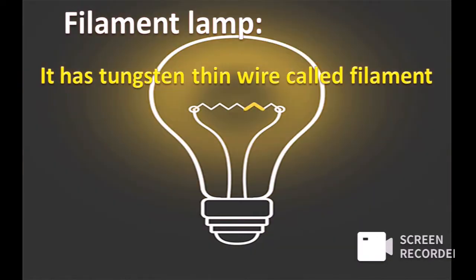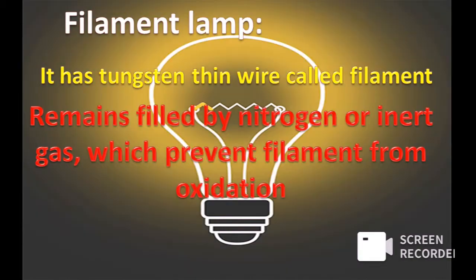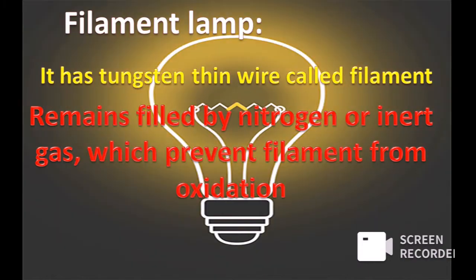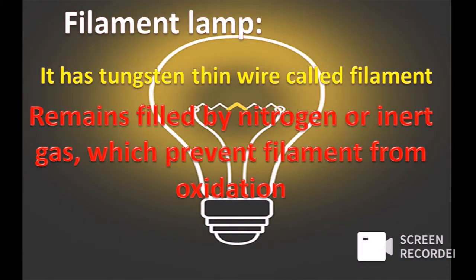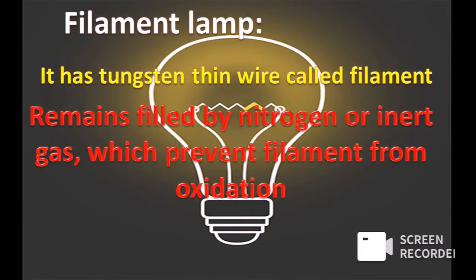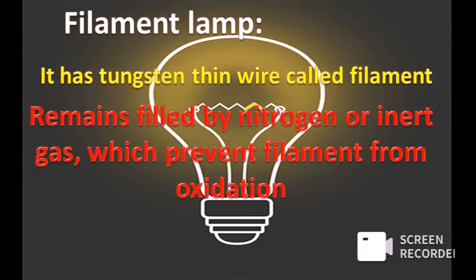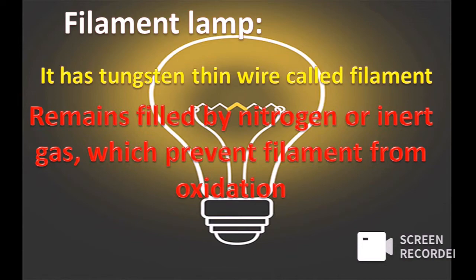Filament lamp has a tungsten thin wire called a filament, and it remains filled with nitrogen or an inert gas which prevents the filament from oxidation or burning. Due to its high resistance, tungsten becomes red hot when electric current passes through it and emits light energy.